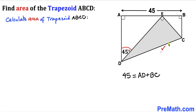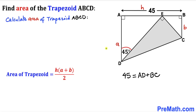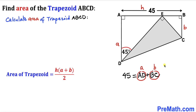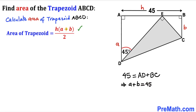For the final step, let's calculate the area of trapezoid ABCD using the formula: Area = h × (a + b) / 2. In our case, the height h is AB = 45, and the bases are AD and BC. Since AD plus BC equals 45, our (a + b) equals 45.